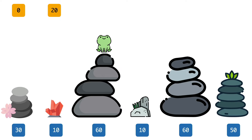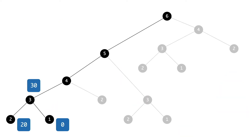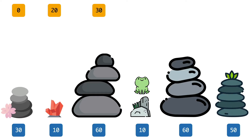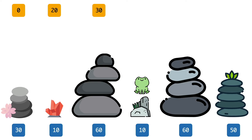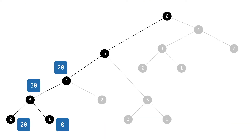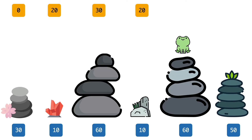With three stones, we ask: how did you end up on the third stone? There are two possibilities — you came from the second stone (costing 50) or from the first stone (costing 30). The final answer is the better of 50 plus 20 versus 30 plus zero, so 30 wins and we report 30. Moving to four stones: did you come from the third stone (cost 50, total 80) or the second (cost 0, total 20)? Between 80 and 20, clearly 20 wins and is recorded as the answer.